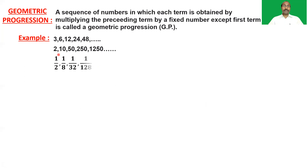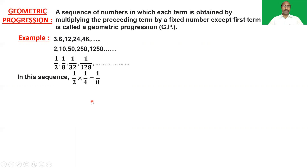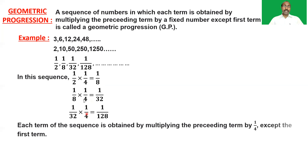One more example: 1/2, 1/8, 1/32, 1/128, and so on. In this sequence, 1/2 into 1/4 is equal to 1/8, and 1/8 into 1/4 is equal to 1/32. Each term of this sequence is obtained by multiplying the preceding term by 1/4. So these terms are in geometric progression with first term a equal to 1/2 and common ratio r equal to 1/4.